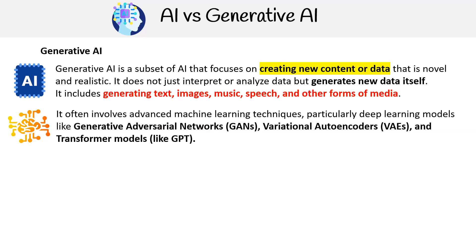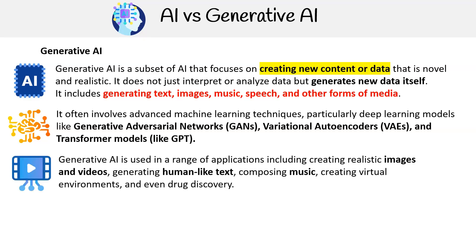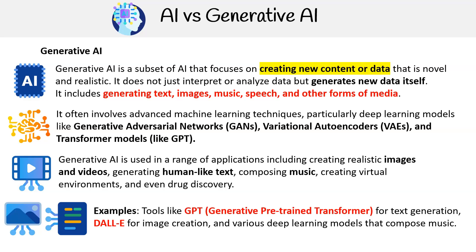It often involves advanced machine learning techniques, particularly deep learning models like generative adversarial networks, variational autoencoders, and transformer models like GPT. Generative AI is used in a range of applications including creating realistic images and videos, generating human-like text, composing music, creating virtual environments, and even drug discovery. Some examples include tools like GPT for text generation, DALL-E for image creation, and various deep learning models that compose music.